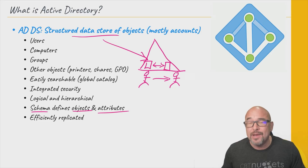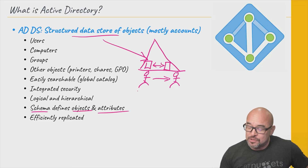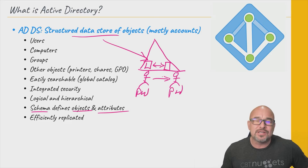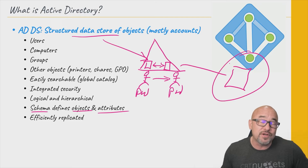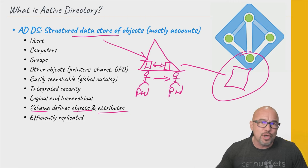Later on we'll be talking about something called Flexible Single Master Operations, also known as FSMOs, and these are special roles that each one might have. But as far as the accounts go, one is not really special compared to another. These peer domain controllers have a replication mechanism built into them where anything that changes — say a user changes their password — gets reflected over on the other domain controller. That happens almost instantly in a single site. If you have a domain controller in a different city in a different site, there's also an efficient replication mechanism that makes sure it's still replicated there in a practical and timely fashion, and that's adjustable as well.